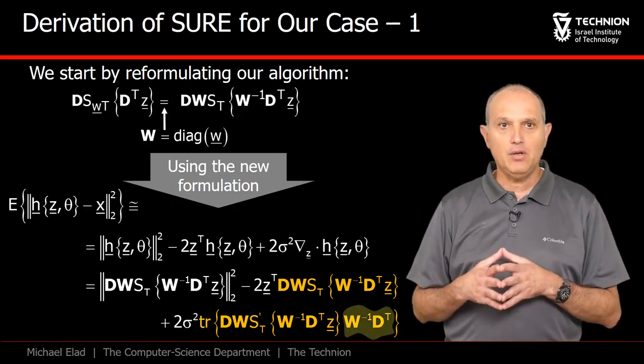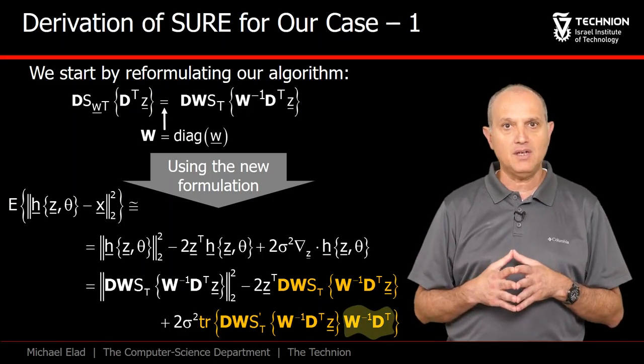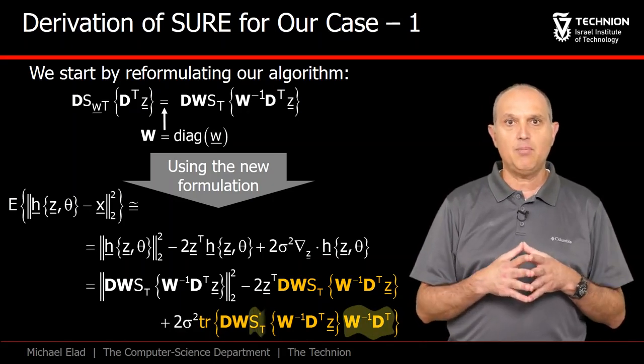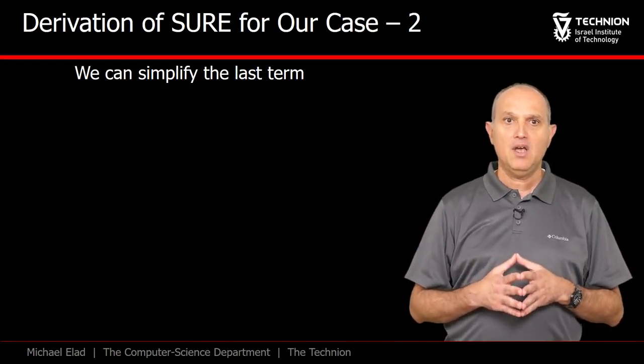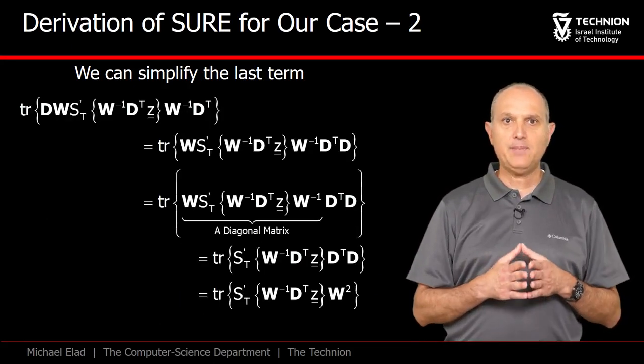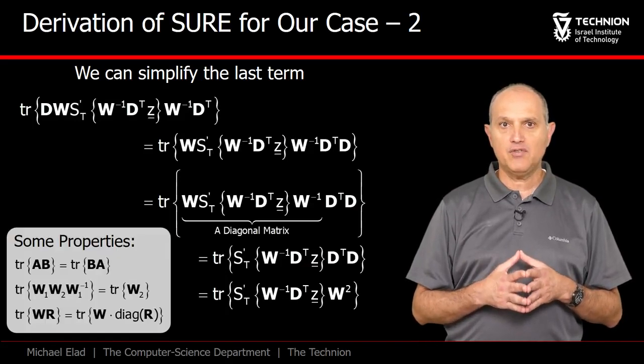In this case, the inverse of W times D transpose pops to the right, and the thresholding curve is replaced by its derivative. The last term is the most complicated, and we can simplify it. The steps taken here rely on properties of the trace operator.